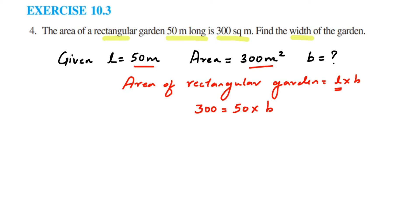Now it's like an equation. I have to find out the value of b. So I'm going to transpose 50 to the other side. When you transpose 50 which is in multiplication to the other side, it comes in division. So 300 divided by 50 equals b.